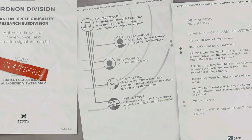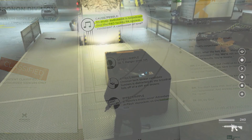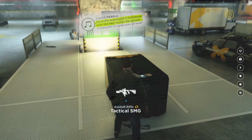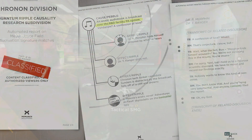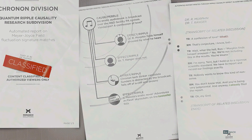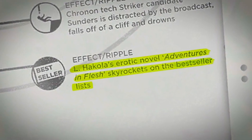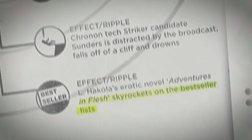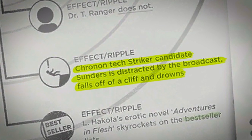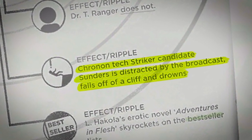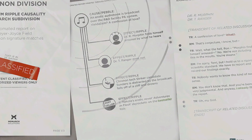Ripple 6: Erotic Audiobook. Nature of pebble: Jack taps into a Monarch PA system and broadcasts an erotic audiobook to distract the security team who were trying to locate him. Being one of the humorous ripples, not much comes from this that is unexpected. The novel itself becomes a bestseller after many of the Monarch guards listen to it all night. Secondly, one of the striking team candidates ends up being distracted while testing out the suit, leading him to fall off a cliff and drown.